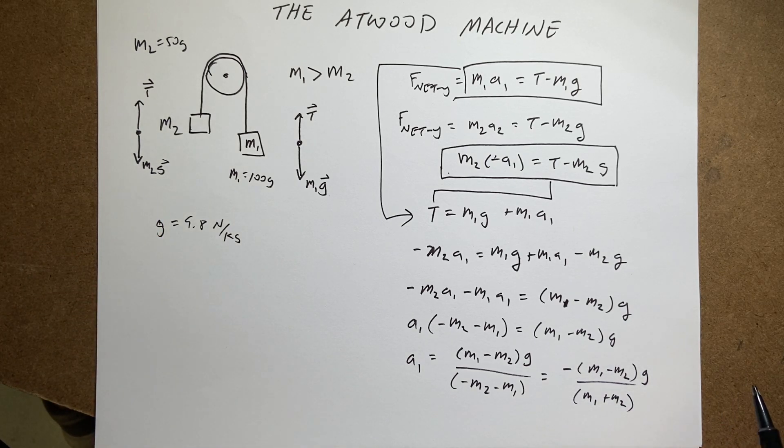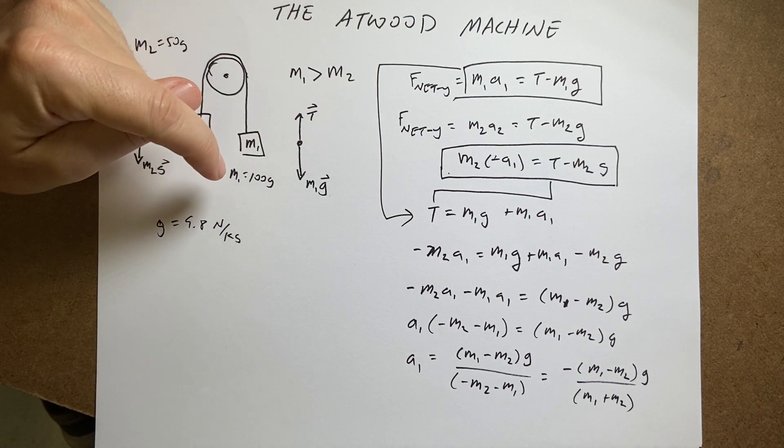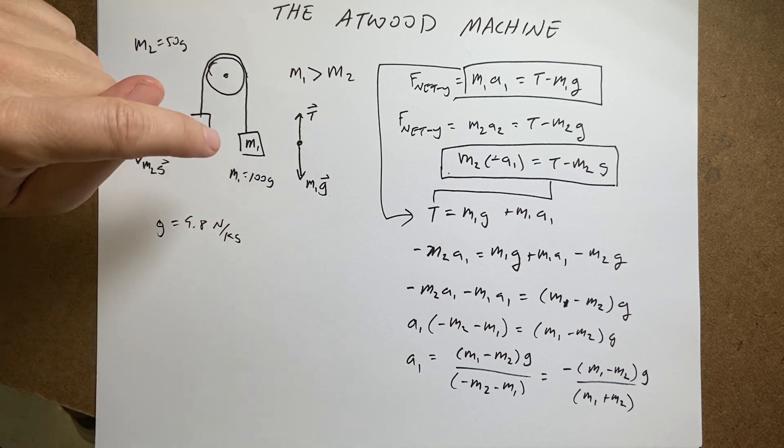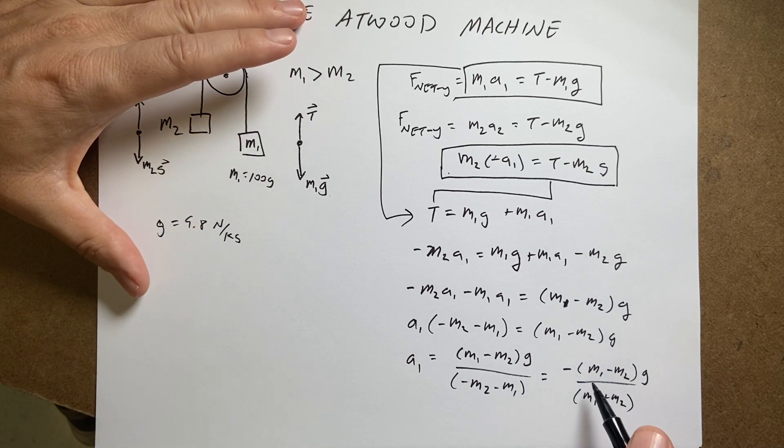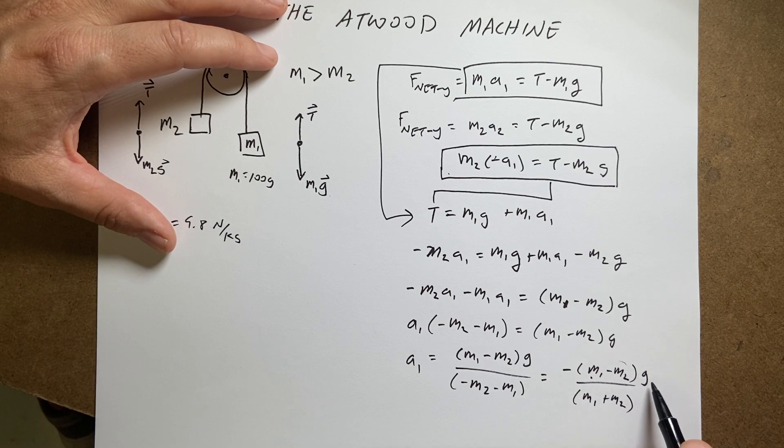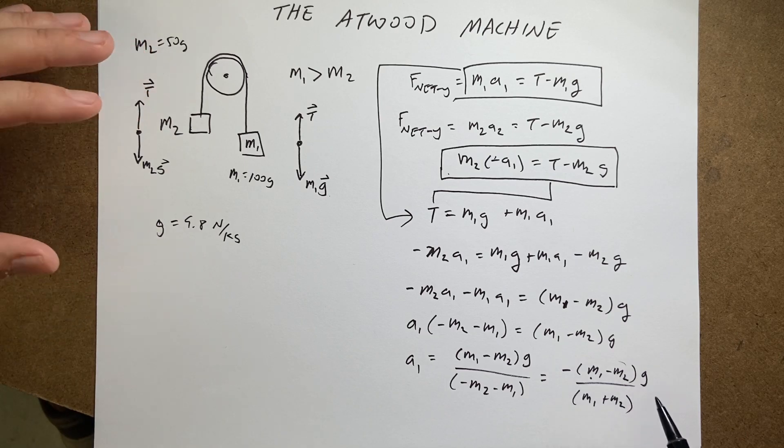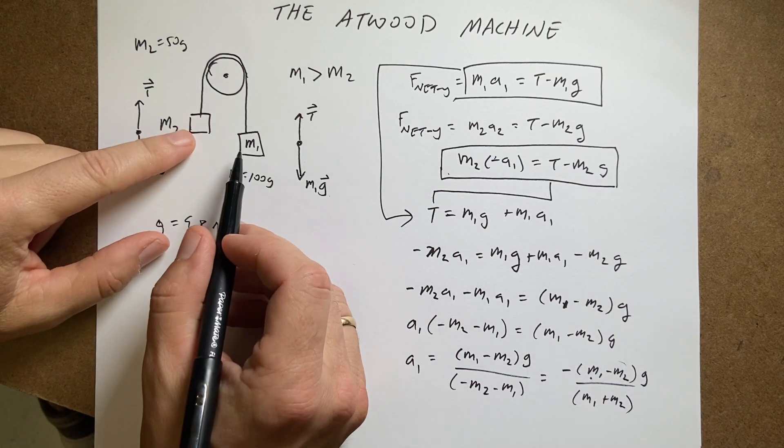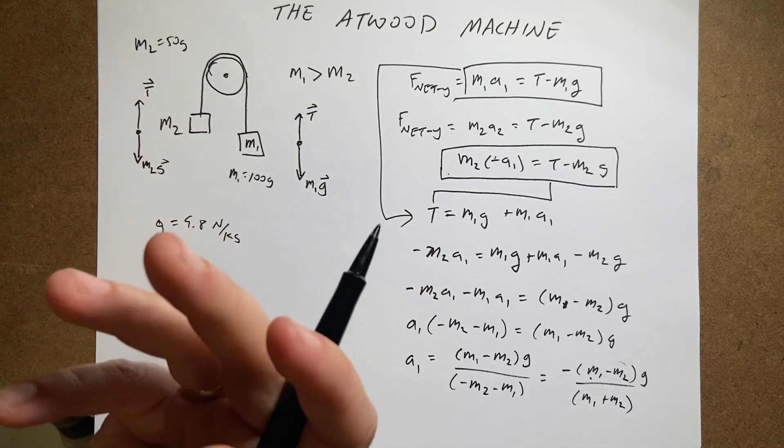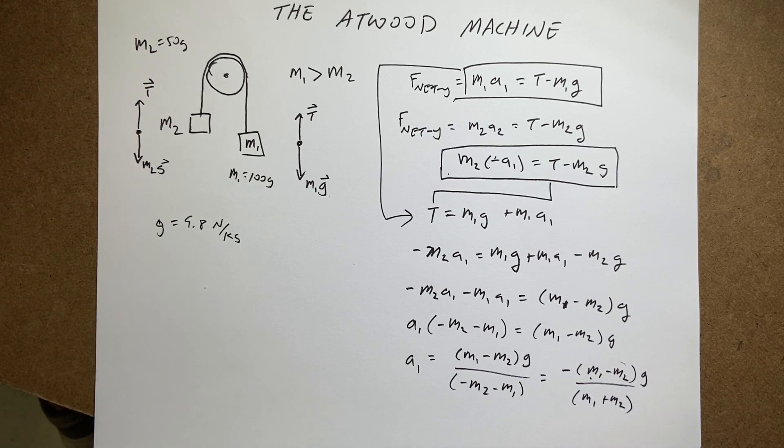So we can do a couple things here. First step is to check the sign. I already said that a1 should be negative. It should be accelerating down, which I'm pointing as moving down. But it could be moving up and accelerating down. So is this going to be a negative number? So m1 is greater than m2, so that's positive. And that's positive and that's positive. So everything is positive except for that. So I do get a negative value. So that's good. Now what about the case where the two masses are the same? Well, then it should not accelerate at all, right? It's in equilibrium. So if m1 equals m2, then I get 0 up top and I get 0. That's good.